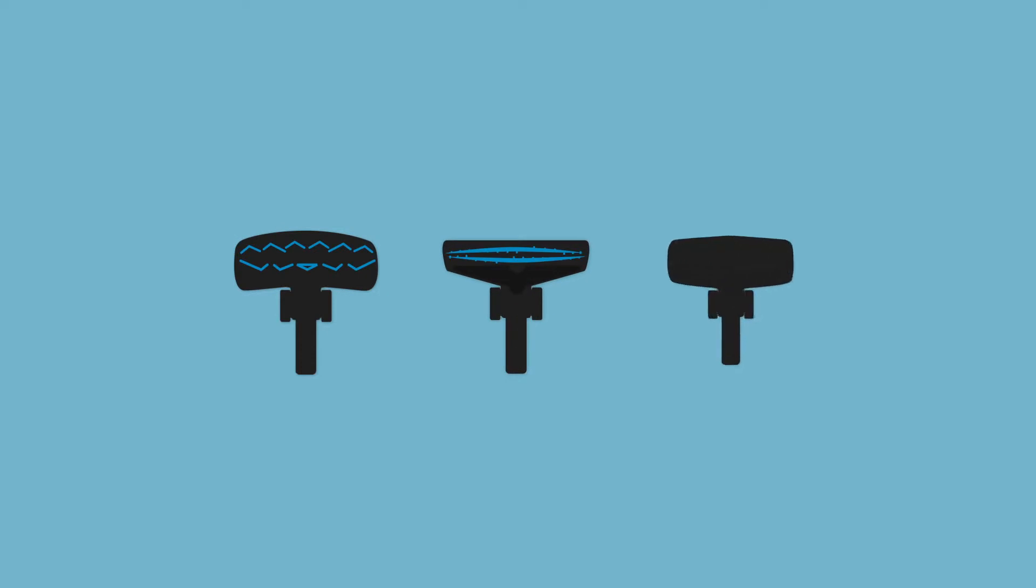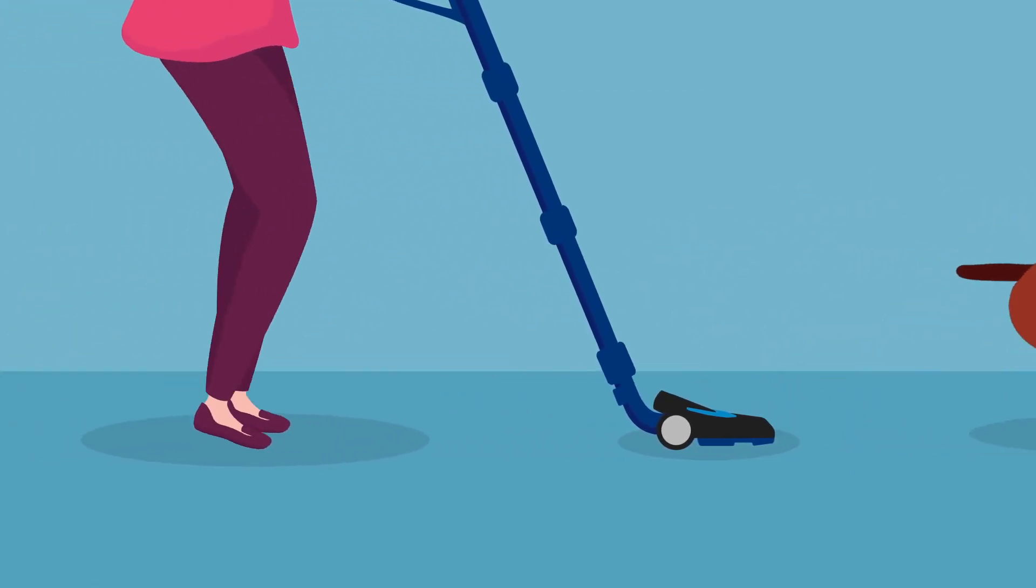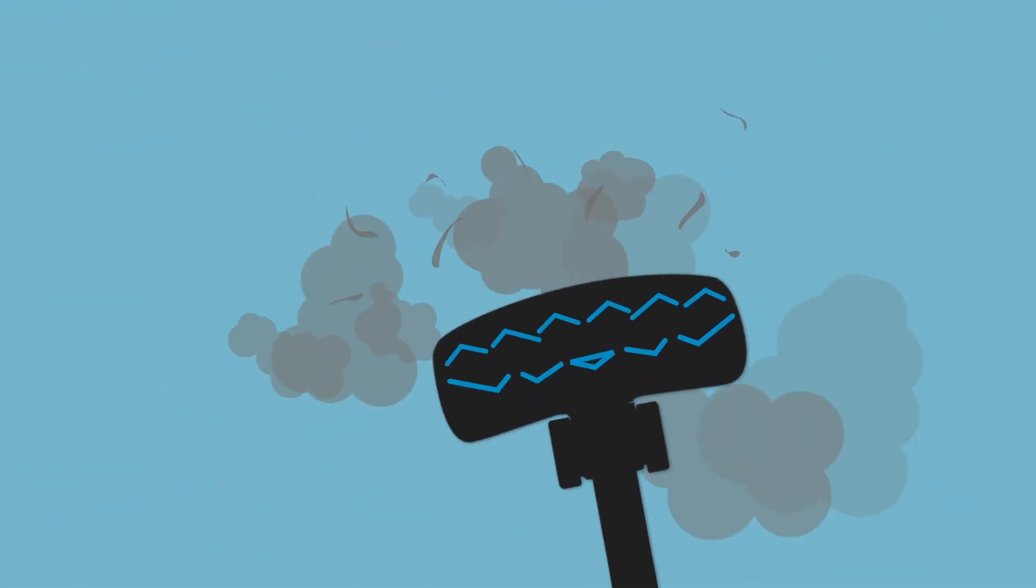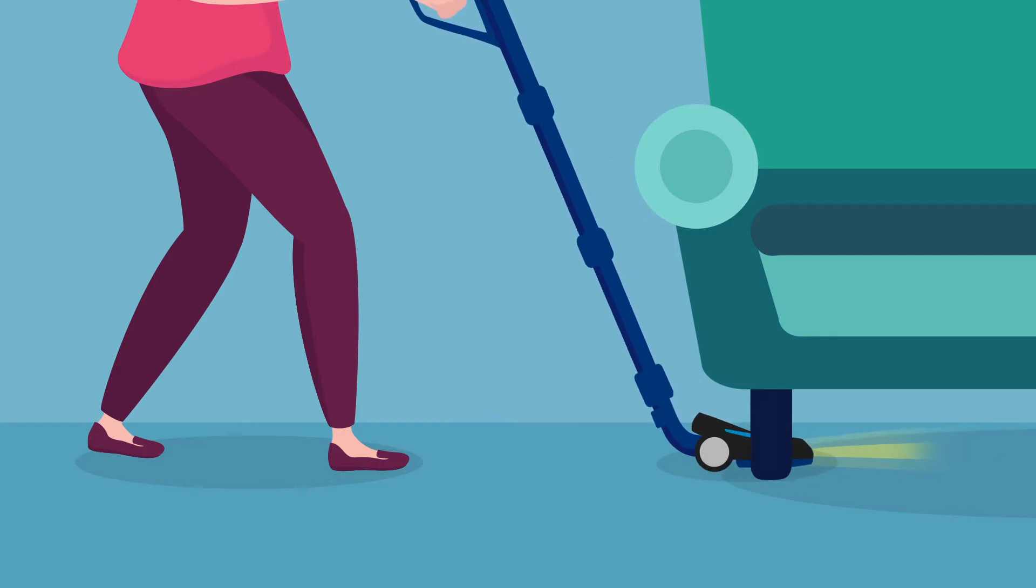Specially engineered nozzles provide help with different cleaning needs. The Turbo Brush Nozzle removes pet hairs from carpets. The Tri-Active Advanced Nozzle picks up dust and crumbs from hard floors in one go. The Tri-Active LED Nozzle reveals hidden dust.